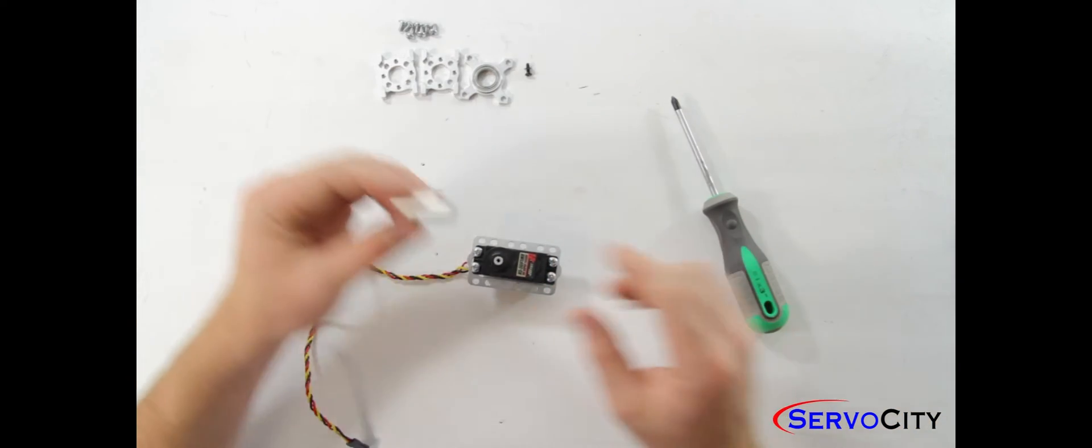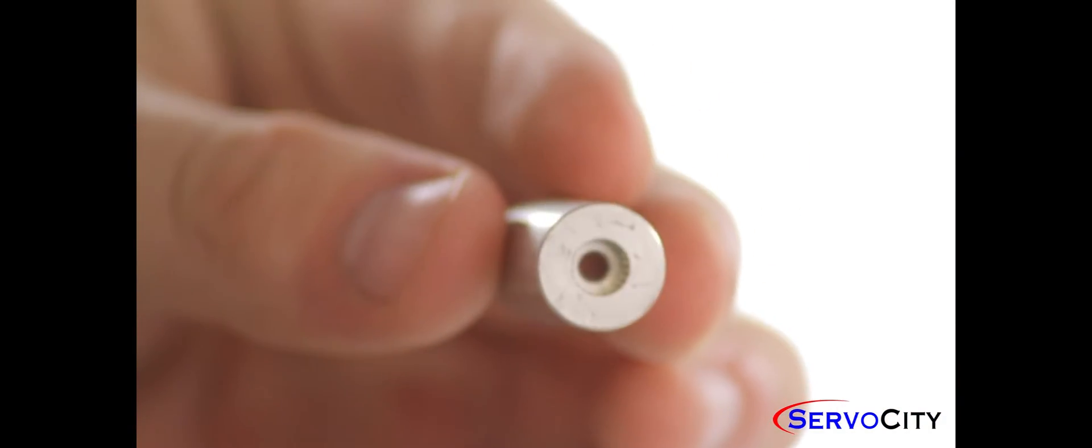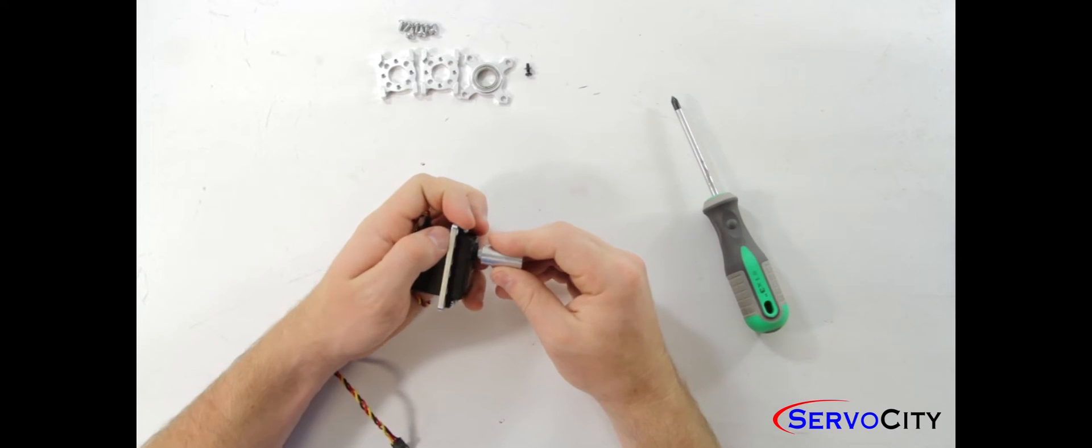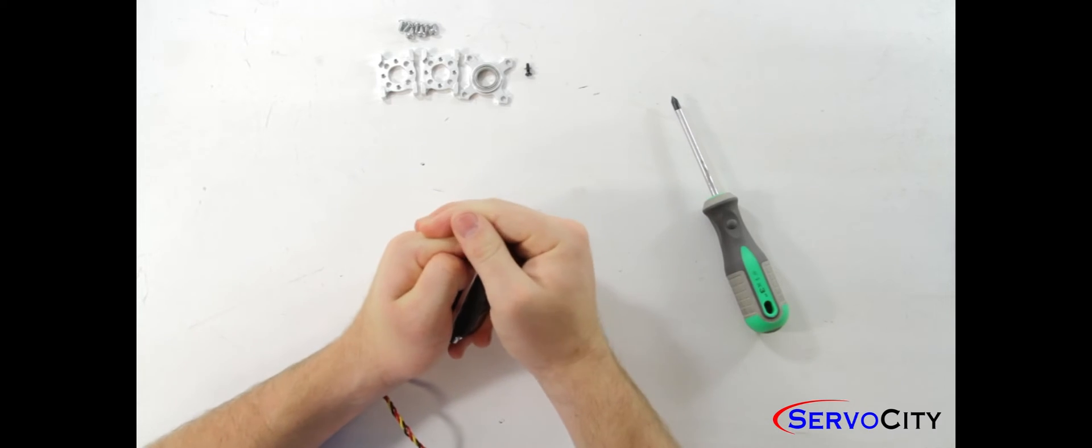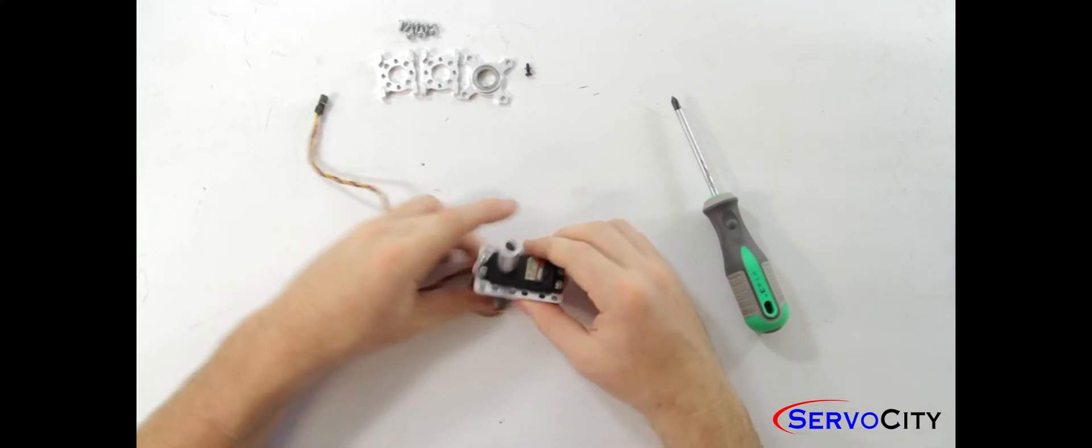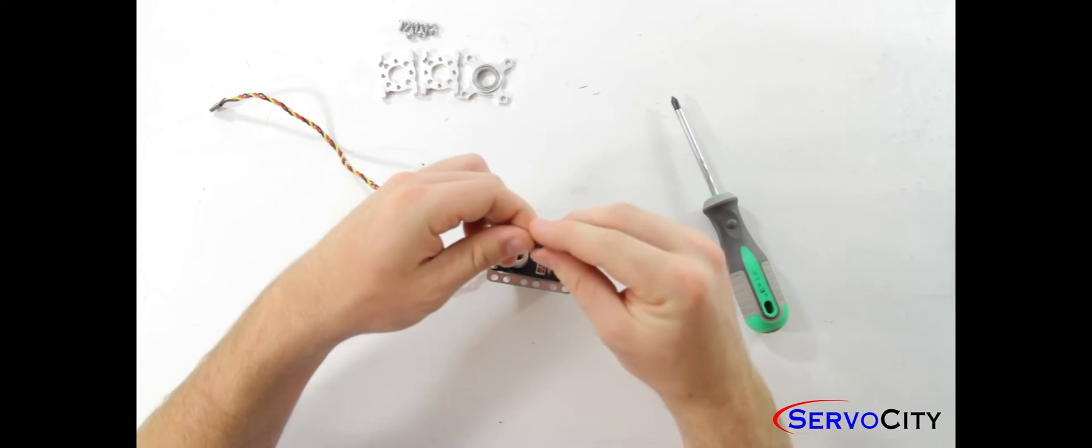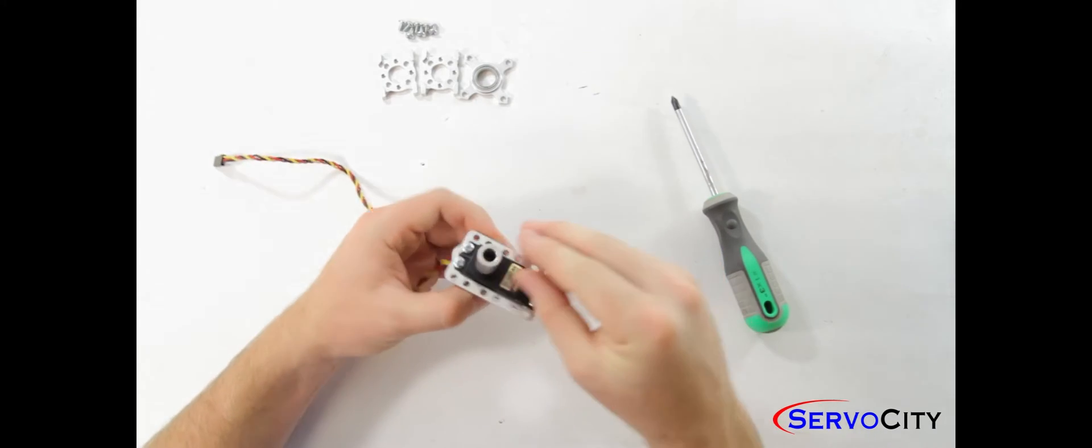The next piece we will use from our kit is the 1 half inch servo shaft attachment. You are going to take the servo shaft and press it firmly onto the output shaft of your servo until it is nice and snug and then we will use the screw that we saved from earlier to finish fastening that in place.